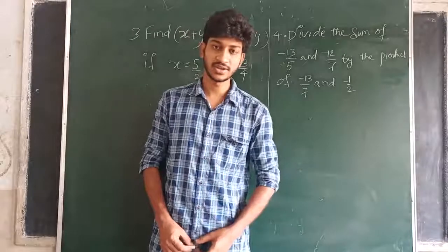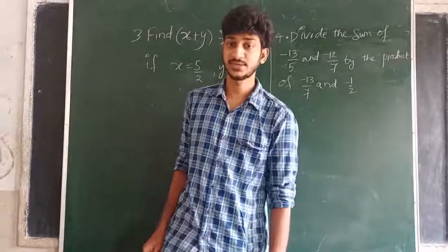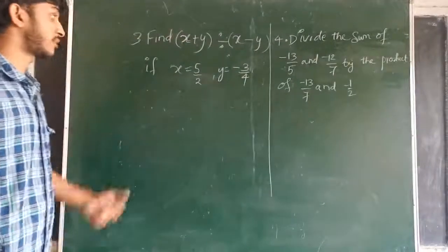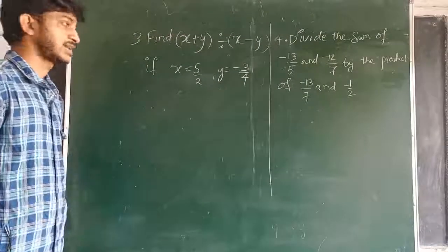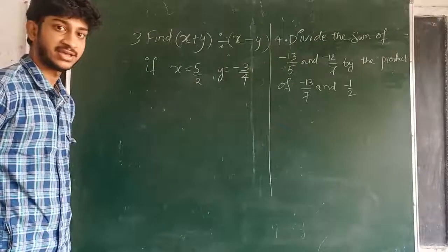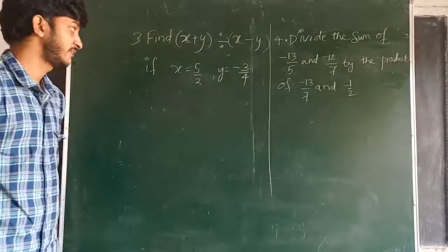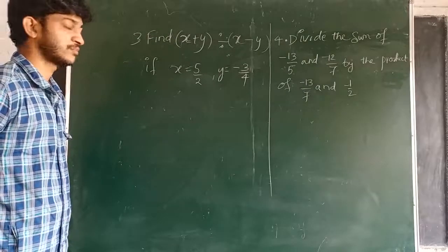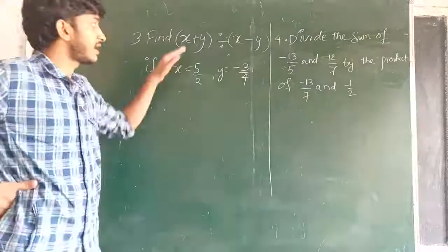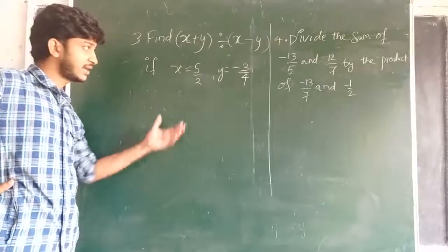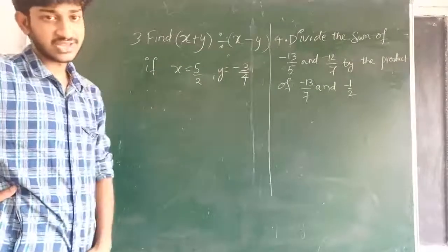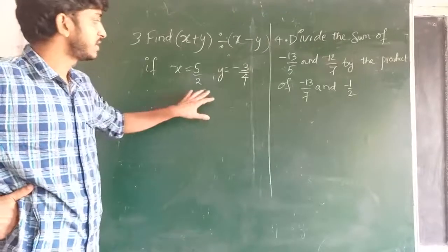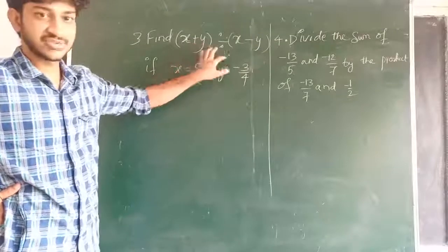Hi students, good morning everyone. Let's start our presentation. In exercise 1.3, this is a thought problem. Find x plus y divided by x minus y, if x equals y by 2 and y equals minus 3 by 4. We have to find x plus y divided by x minus y, and the x and y values are given. We simply substitute these two values in this equation.